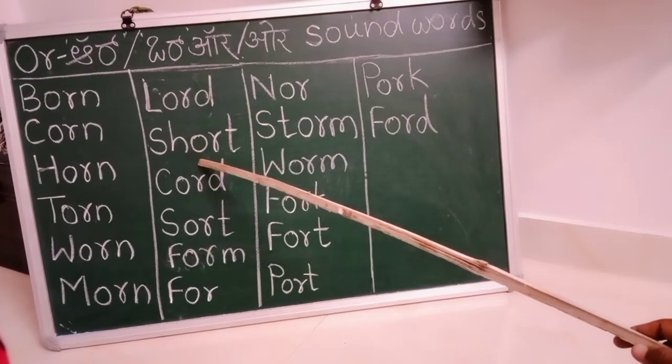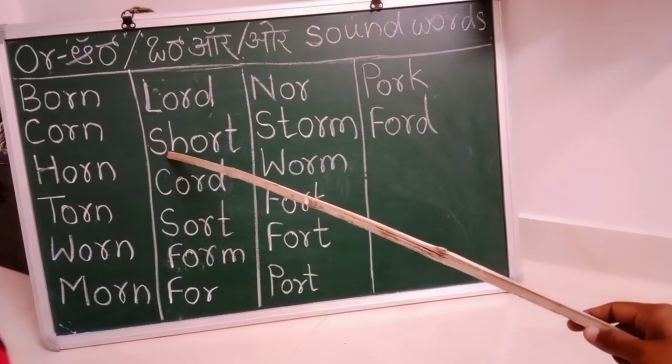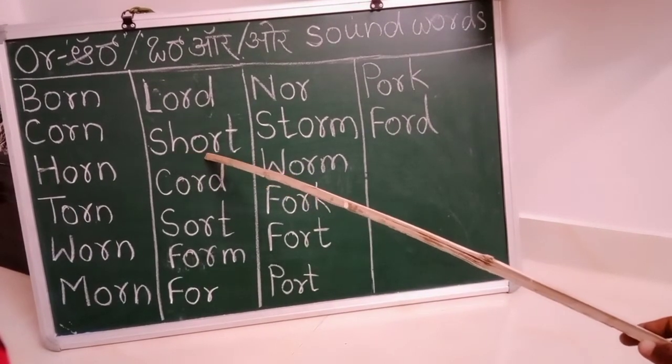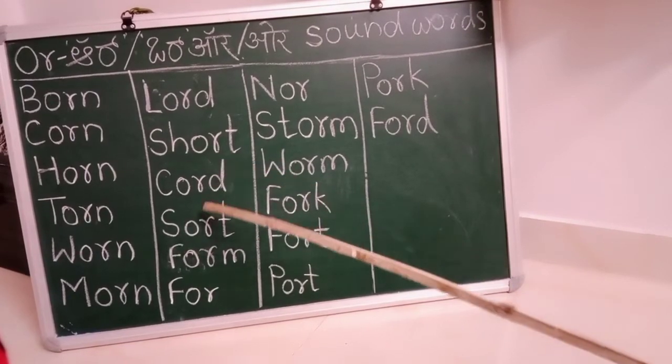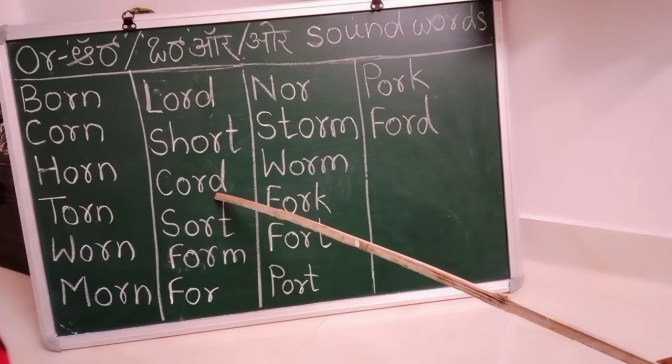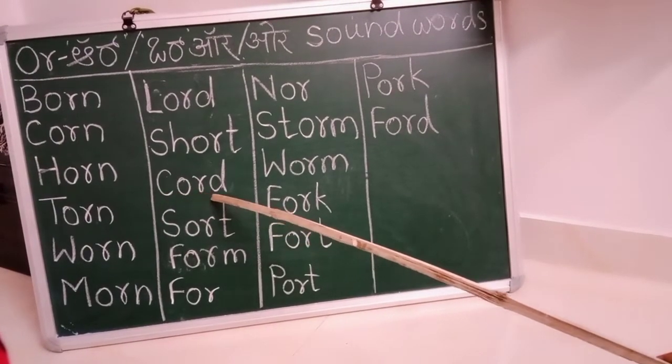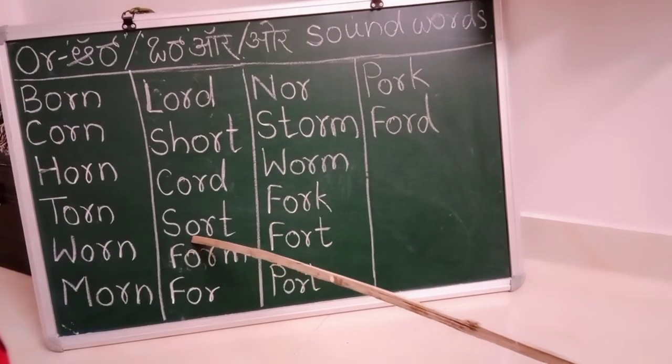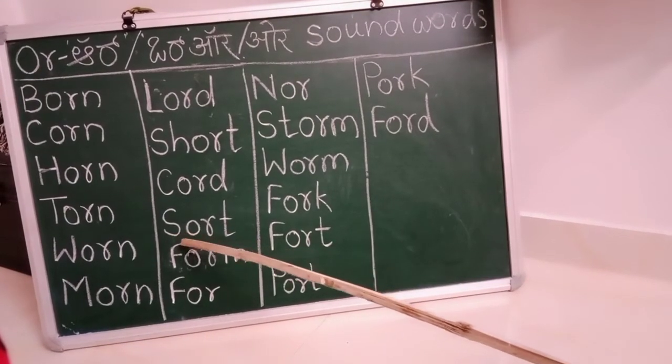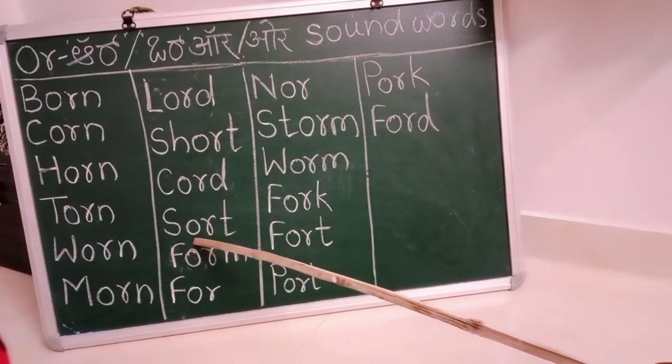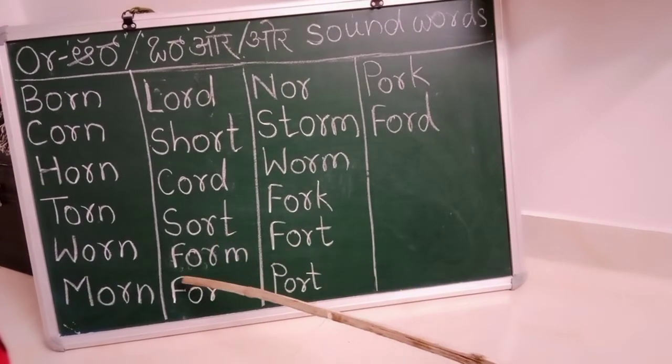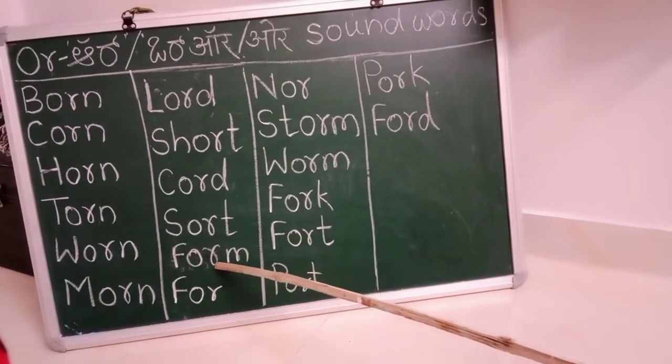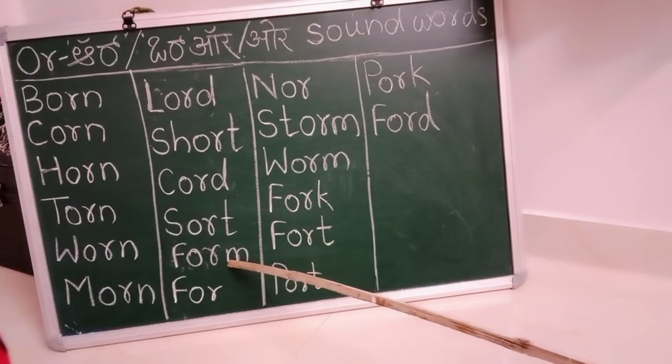Short: S, h, o, r, t. Cord: C, o, r, d. Sort: S, o, r, t. S, o, r, t. Sort. Form: F, o, r, m. Form. F, o, r, m. Form.